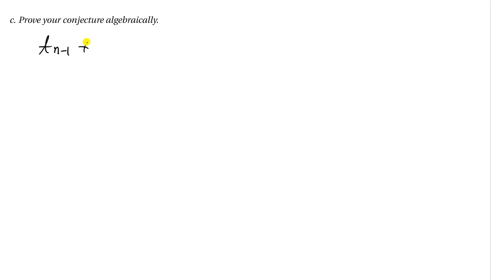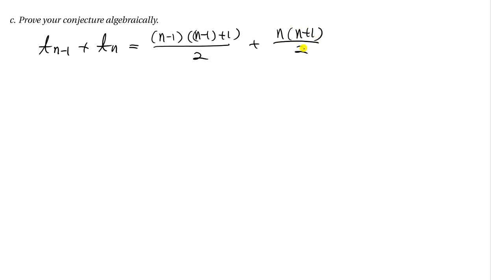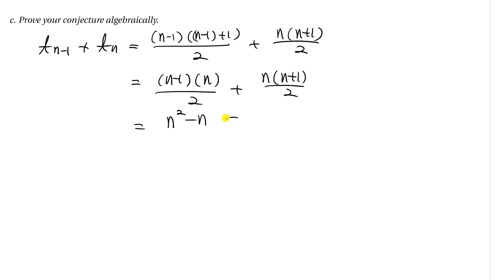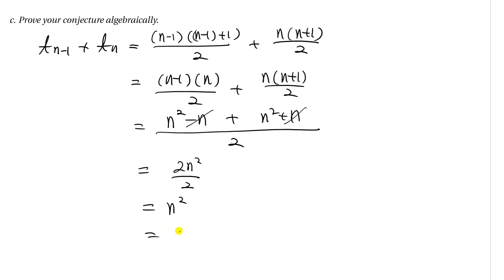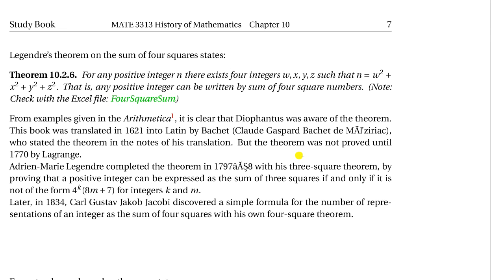Now let's give the formal mathematical proof. Starting with T_{n-1} + T_n, and using the triangle number formula T_n = n(n+1)/2: T_{n-1} = (n-1)·n/2 and T_n = n(n+1)/2. Adding them: (n²-n)/2 + (n²+n)/2 = 2n²/2 = n². Therefore S_n = n². That completes the proof.